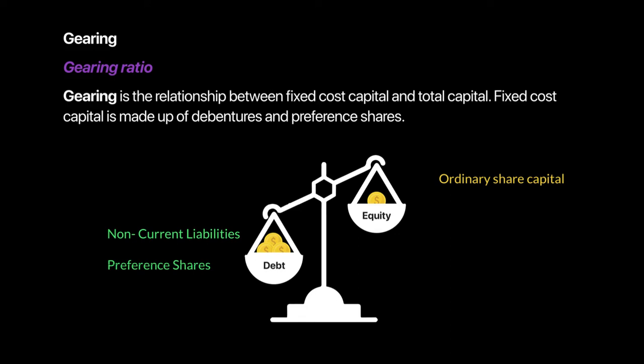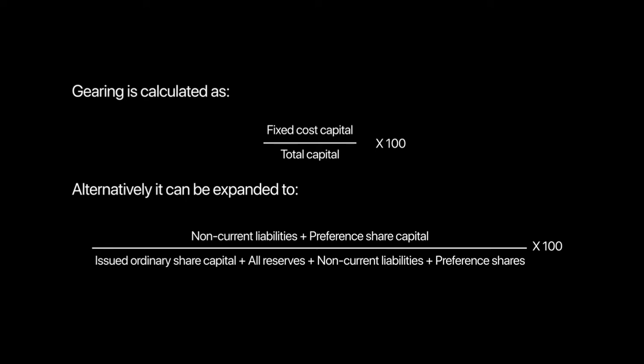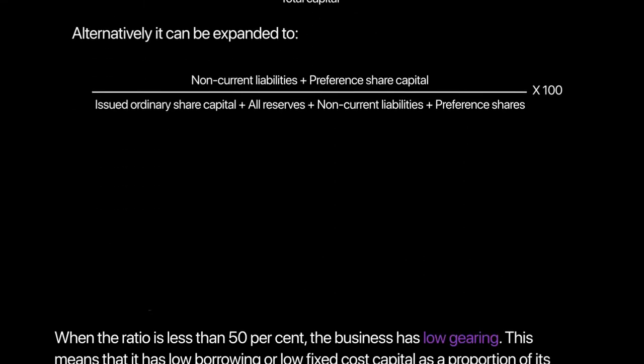To measure gearing, we calculate: Fixed Cost Capital divided by Total Capital, multiplied by 100. Fixed cost capital is the total of non-current liabilities and preference share capital, which require fixed annual interest or dividend payments. Total capital is all money raised — equity (permanent capital) plus fixed cost capital.